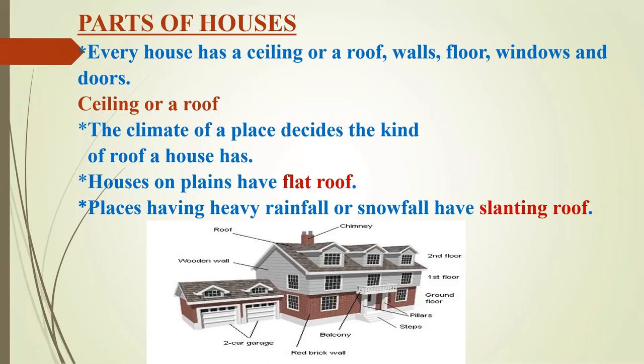Different people help in building and beautifying different parts of the house. Walls — every house has walls. Walls are built by masons using bricks, stone and cement. Later on, the walls are painted by painters. Floor — the floor is made up of tiles or wood, and the tiles are fixed by the mason. Doors and windows are built by the carpenter. Windows give proper ventilation to the house.